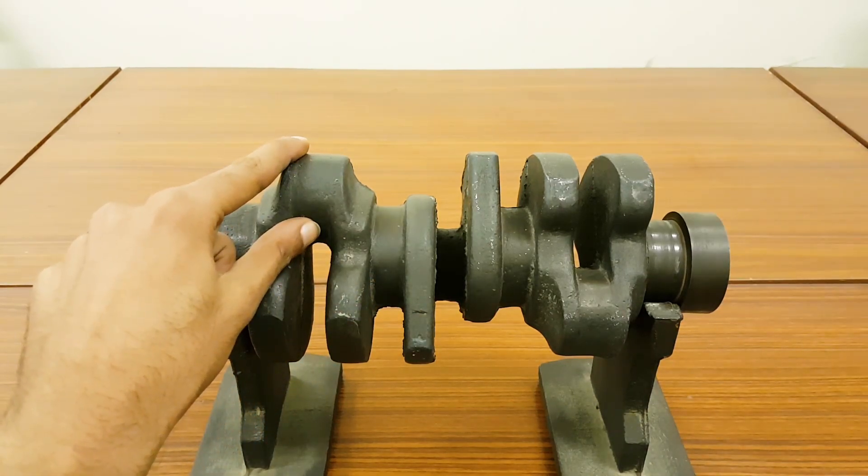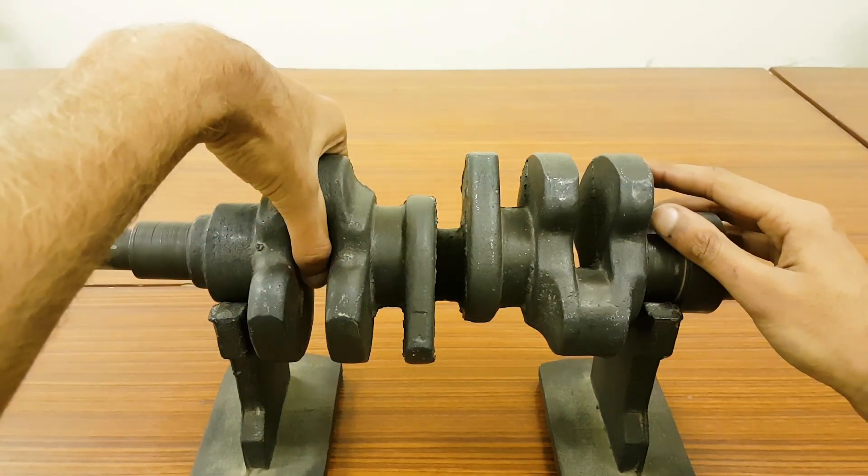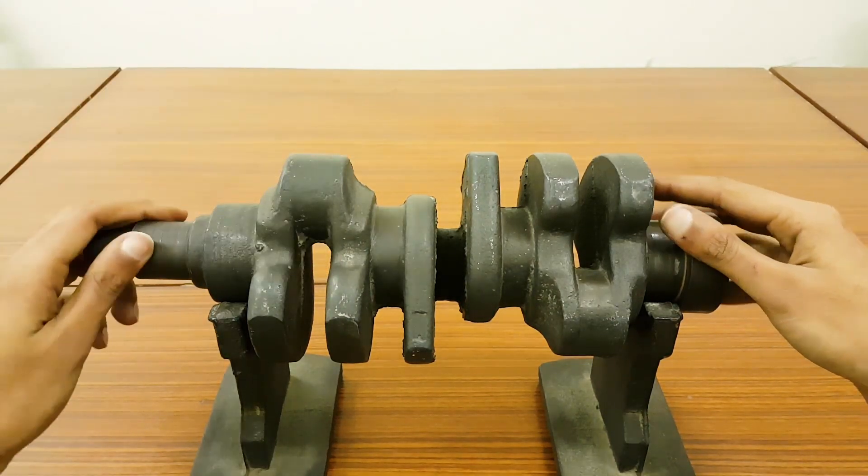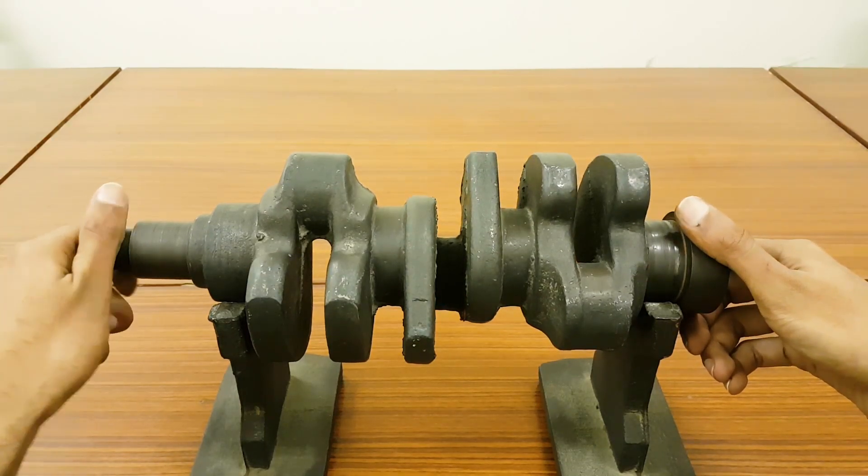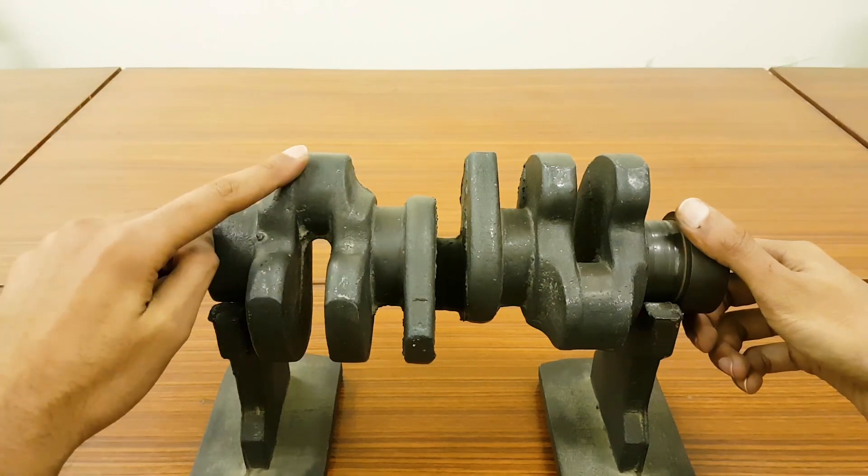These are the spots where your connecting rod gets connected from the big end to this spot. It has three crank pins, so it's a three cylinder engine crankshaft. You can count the crank pins: one, two, and three.